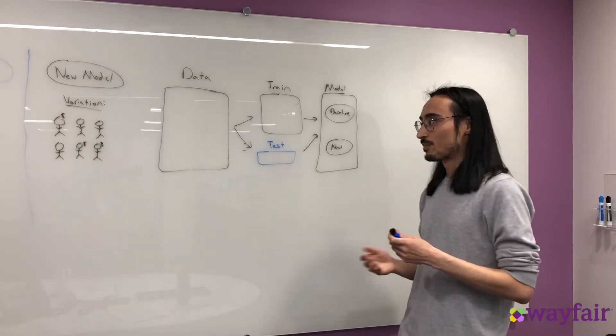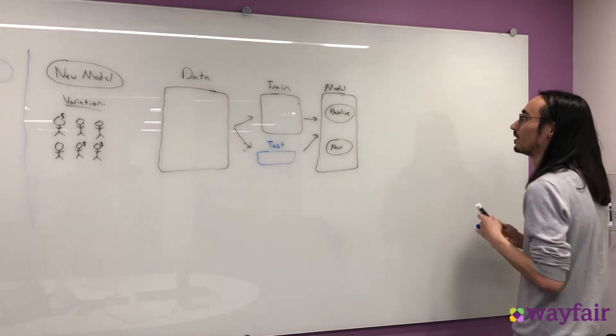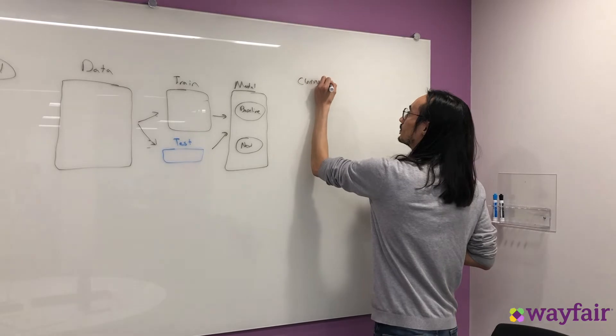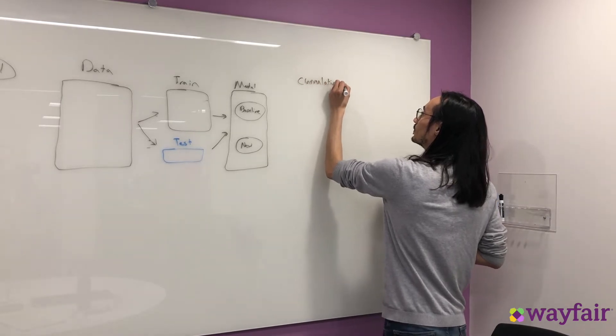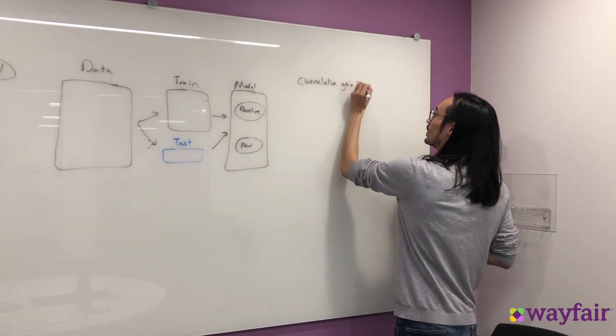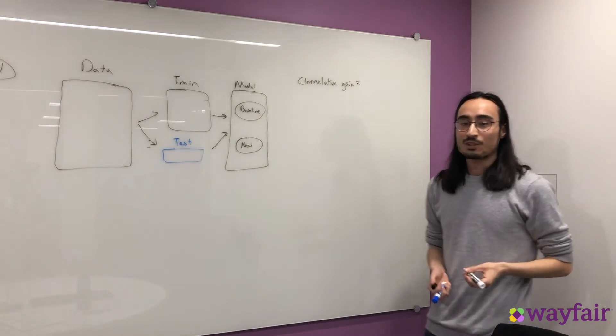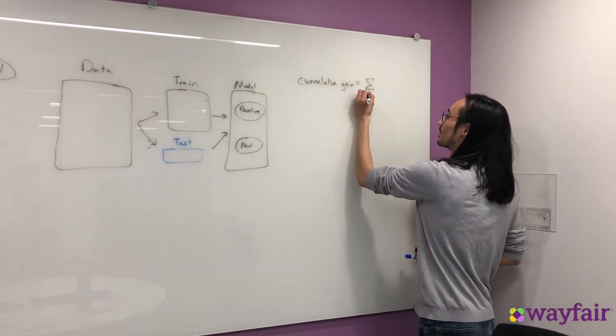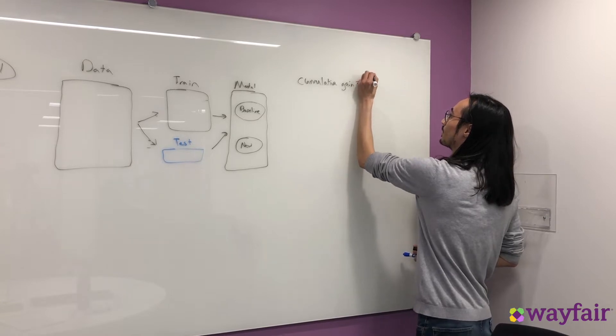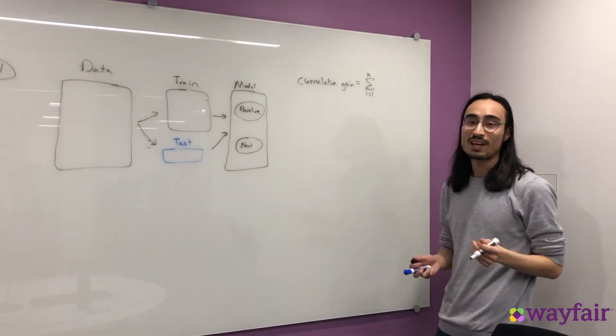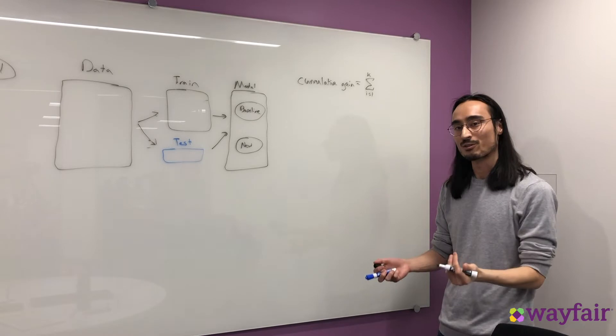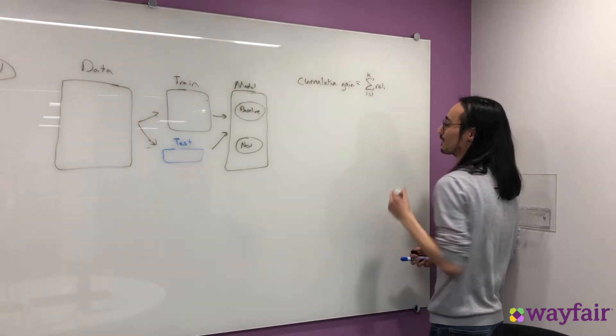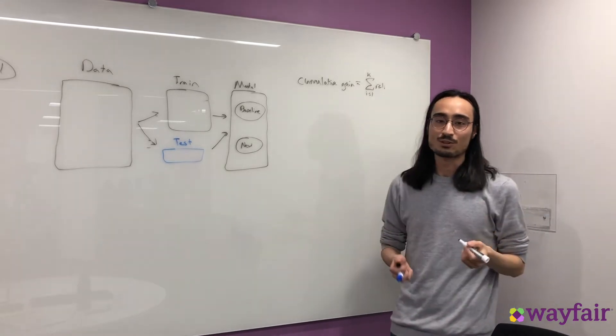One of these metrics is called the cumulative gain. To get the cumulative gain, what we do is we take the sum from i equals 1 to k, where k is the number of recommendations that we're serving to the customer. And we take the sum of this graded relevance score.